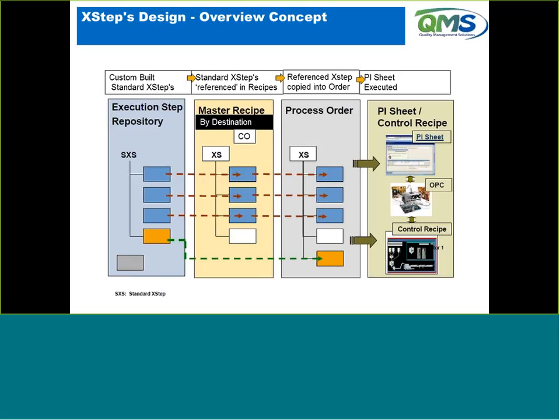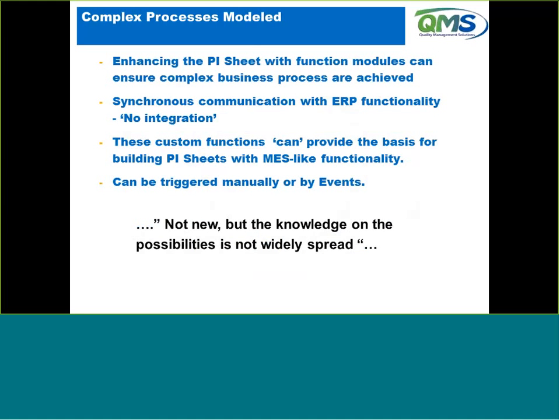Our topic today is really focused on that last piece — the unique PI sheet that an operator would execute on the shop floor. We'll look at variables around that unique PI sheet. We have dynamic icons so if things are changing in the PI sheet, we can see that signatures have been made or errors have happened. We'll show PI sheet signatures and execution steps inside the demo. The PI sheet allows us to enhance complex business processes and make them simpler using function modules — for example, calling a function module to check expiry dating in real time.